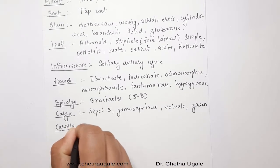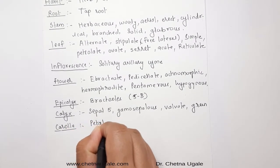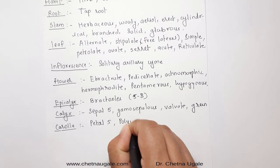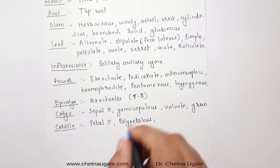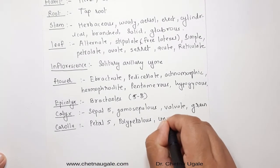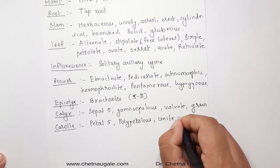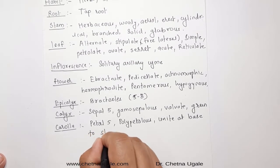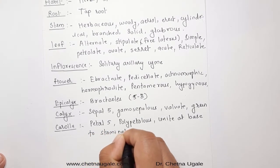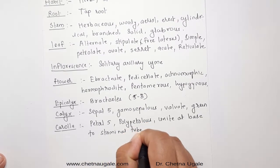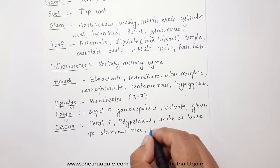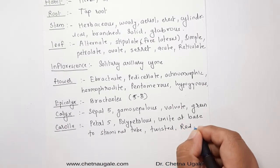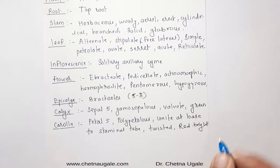The corolla consists of five petals, polypetalous, but the petals are inferior and united at the base. At the base, these petals are united to the staminal tube. The aestivation of the petals is twisted, and the petals are variously colored like red or other bright colors.